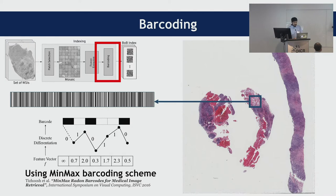For barcoding, we utilize a method from the literature called the min-max algorithm to barcode a feature. The idea of barcoding is that when you perform a distance calculation on a barcode, it's much faster than performing it in Euclidean space or real number space. It could be scaled on the CPU level — a hundred times faster than calculating Euclidean distances — so we can perform fast query retrieval.